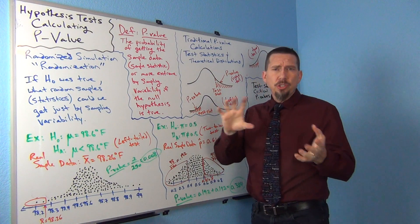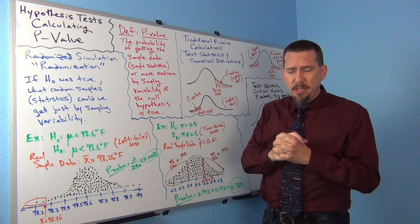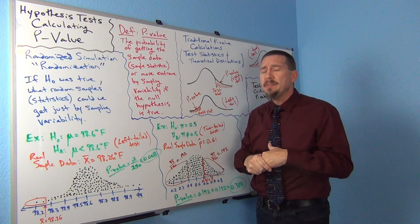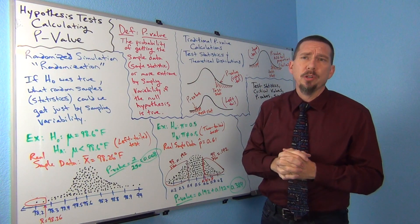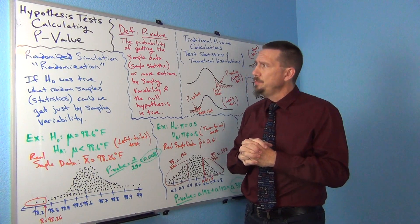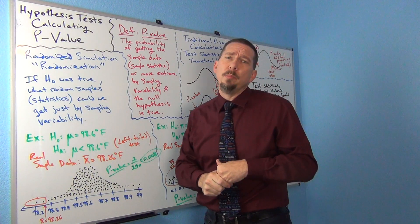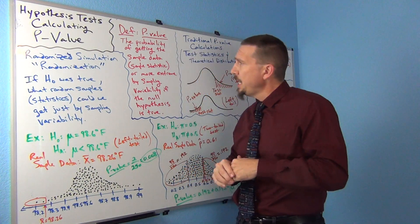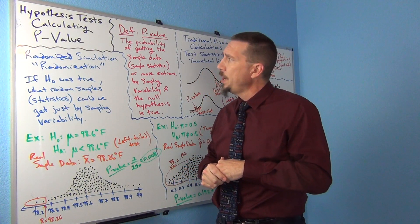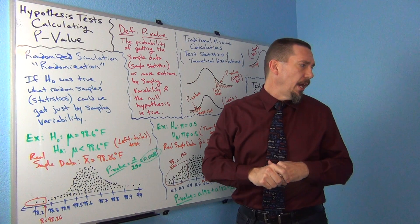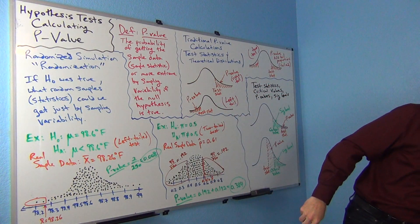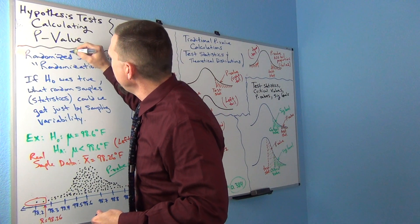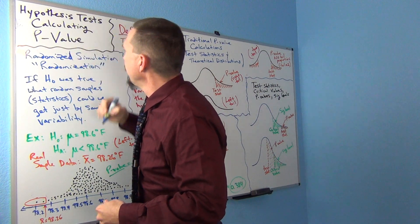There are sort of two main ways that p-values are calculated. We have traditional approaches and we have the more modern approaches to calculating p-value. I'm going to start with the more modern one. We sometimes call this randomized simulation or a randomization approach.